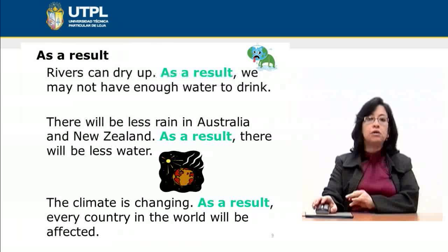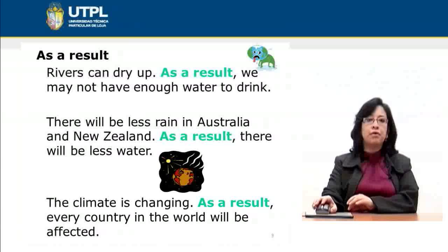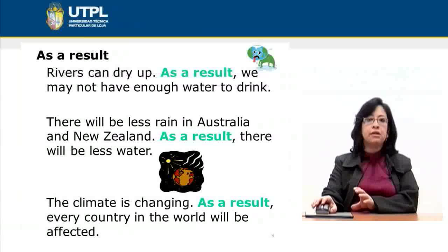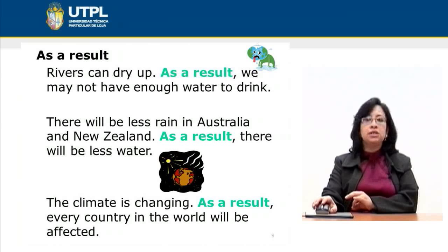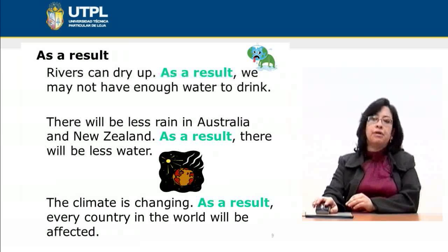In the same way, we use the transition 'as a result' to demonstrate the result or consequence of another event. For example: 'Rivers can dry up; as a result we may not have enough water to drink.' Then: 'There will be less rain in Australia and New Zealand; as a result there will be less water.' And: 'The climate is changing; as a result every country in the world will be affected.' So the result of climate change is that every country will be affected.